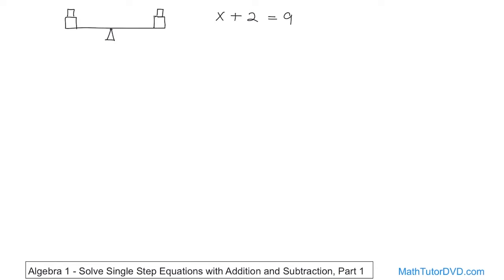Let's continue with an example. Say I take x plus 2 on the left and I add 1 to the left-hand side. Algebra's rule — which I'm trying to teach you — is you have to do it to both sides. The x plus 2 is from the original left side, the 9 is from the original right side. All I did was add 1 to the left and add 1 to the right. As long as you do the same thing to both sides, the equation remains balanced and valid. On the left you get x plus 3, and on the right 9 plus 1 is 10.